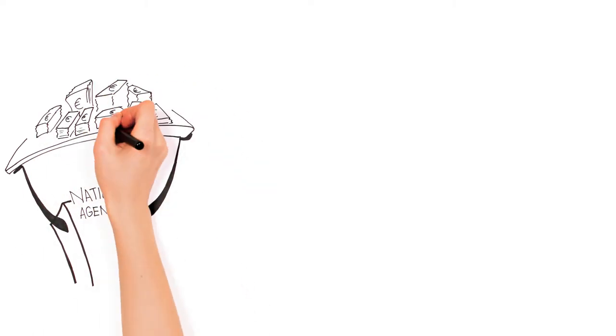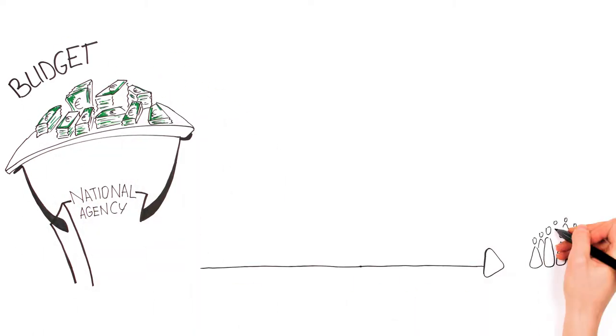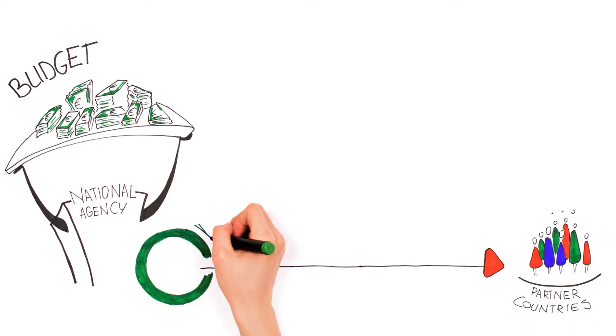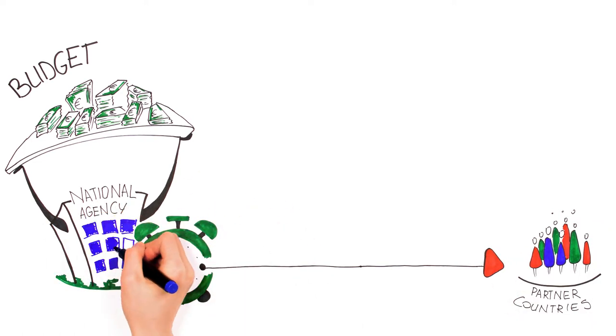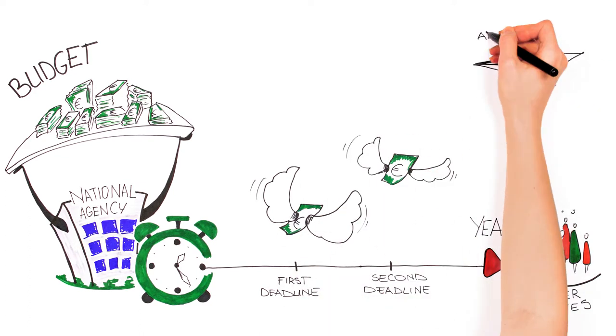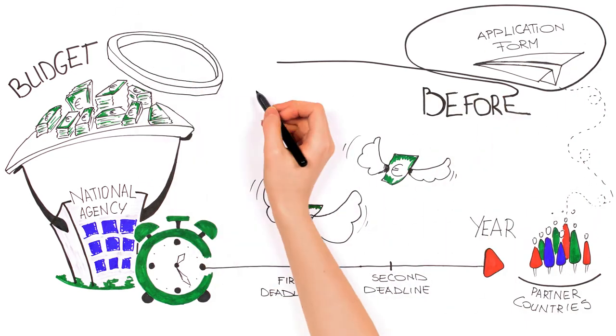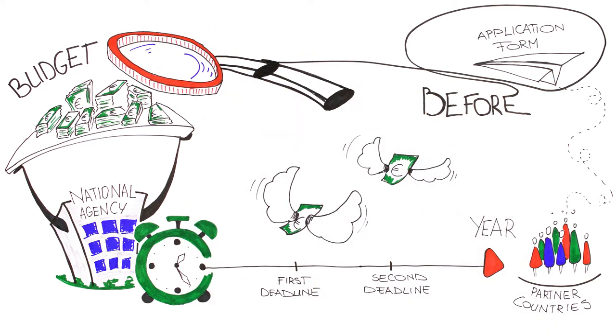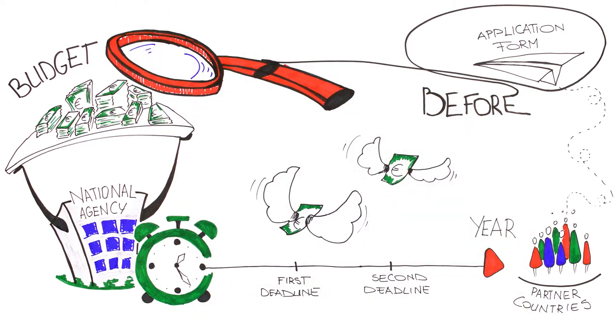Be aware that every national agency has a specific budget for projects involving youth groups from partner countries. Therefore, quite often, this budget is spent by the first and the second deadline of the year. Always check with the national agency before applying if they still have funds and if they accept project applications involving partner countries.